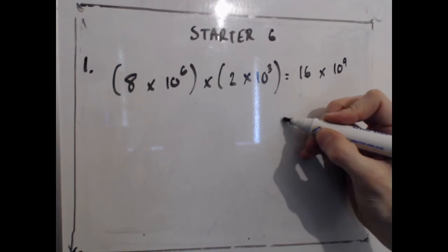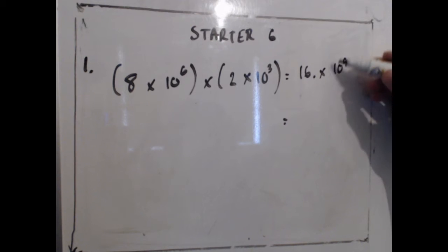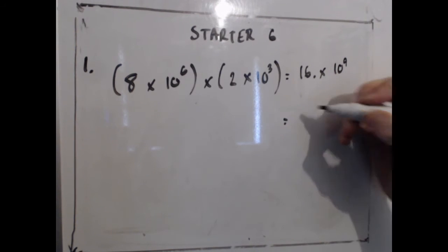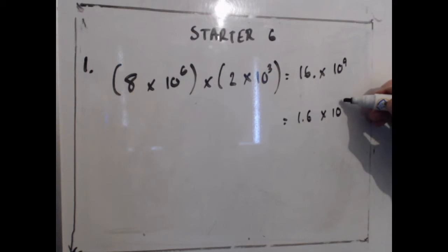This isn't in standard form. I just need to change the decimal place from here to one smaller, and if I reduce this number by a factor of 10, I've just got to increase this number by a factor of 10 to balance it, so that will be 1.6, which is correct standard form, multiply by 10 to the power of 10.